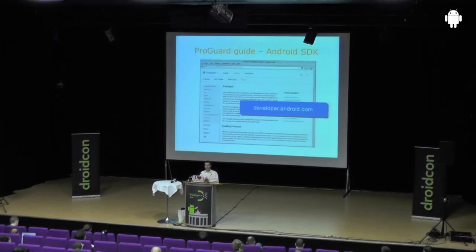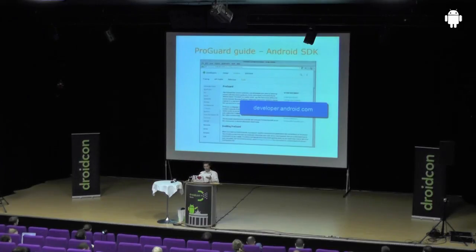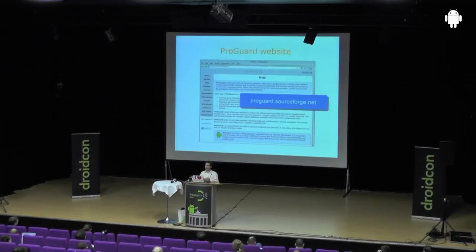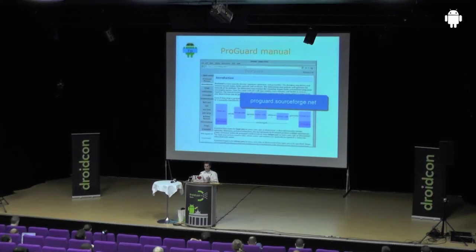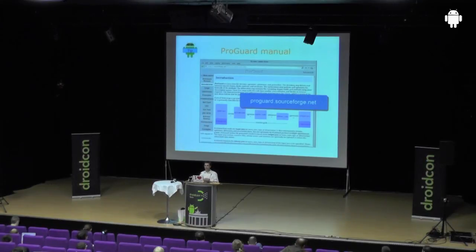If you want to learn more about all the options in ProGuard, you can look at the ProGuard guide in the Android SDK — that's a single page explaining how to enable it. For more about actually configuring ProGuard, head to the website at SourceForge. I really recommend the manual, which I've spent a lot of time on, for learning the basic principles. Most importantly, there's a troubleshooting section that can help a lot if you run into typical problems, as it has accumulated knowledge from years of experience.